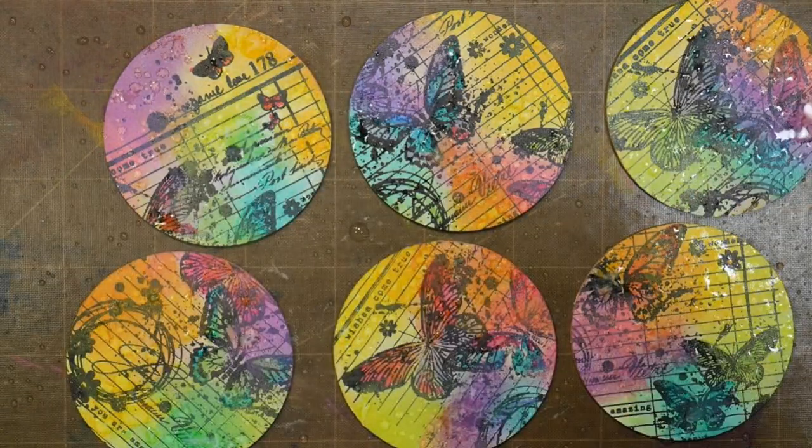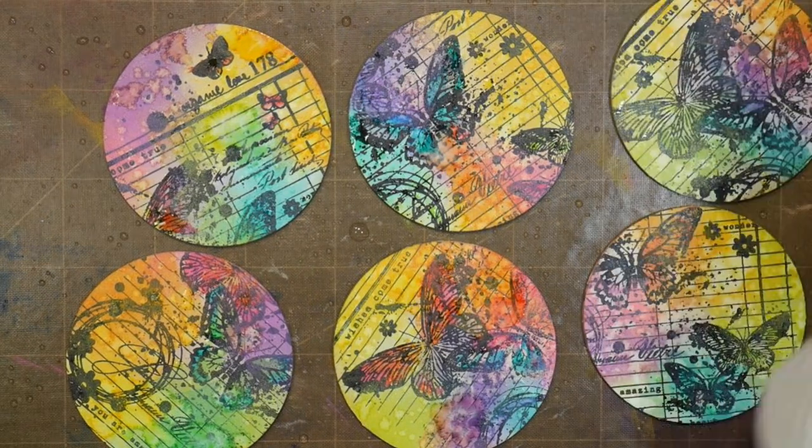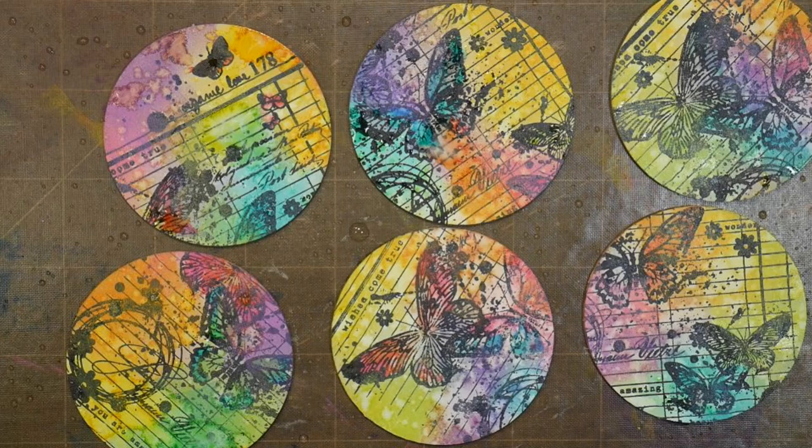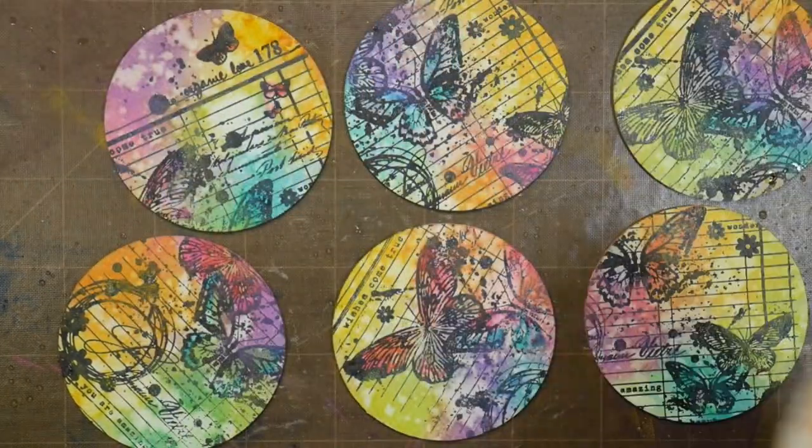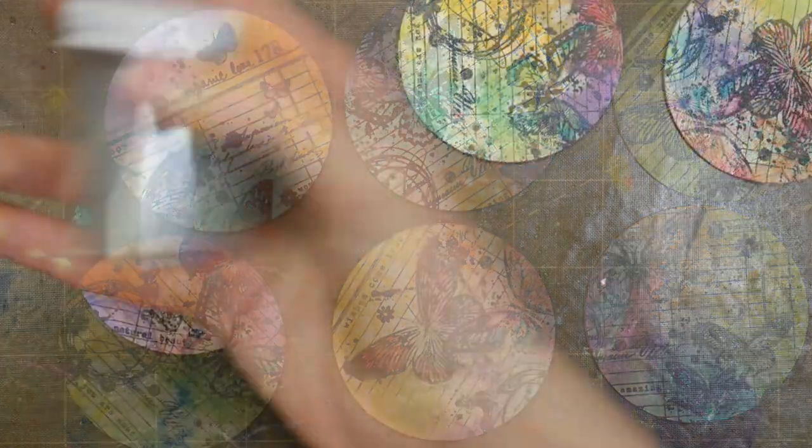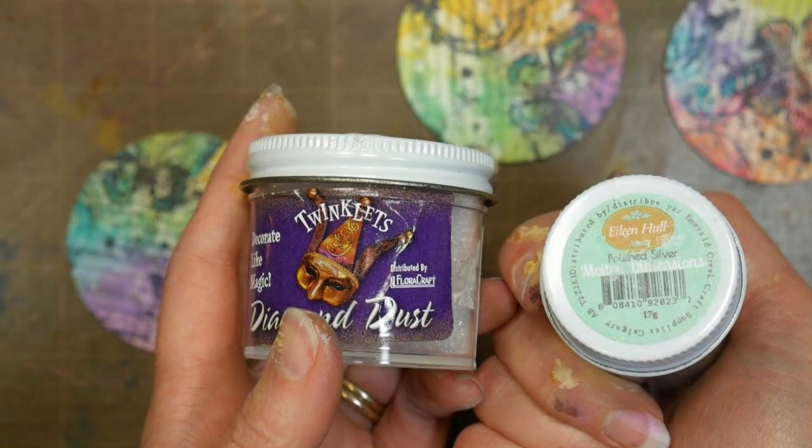Use a sprayer that gives you really big droplets of water or flick it on with a paintbrush so you have big globs of water, then blot it with a cloth or paper towel. That's going to take away the excess distress oxide ink and give you that gorgeous bleach spot look that distress oxide is known for.